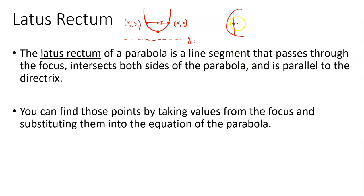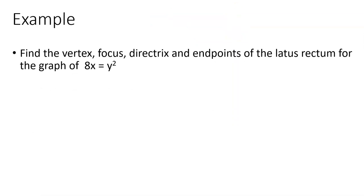How do you find the endpoints? You're going to need something from the focus — you've got an x, y coordinate for the focus. So you're going to use that to figure out from the equation of the parabola what the endpoints are. Let's try one. Find all this information for the graph of 8x equals y squared. All the ones we've done so far have been ones that go through the origin, and so this one is no different. If it's y squared equals 8x, then it goes through the origin.